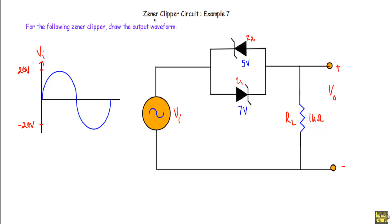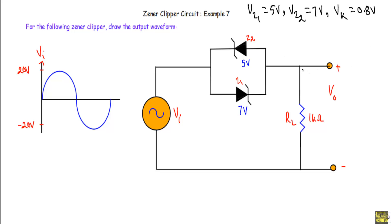In this video I will show you another example of a general clipper circuit. For the following general clipper, draw the output waveform. This is our given circuit — we have to draw the output waveform. In this circuit we have two Zener diodes Z1 and Z2. Z1 has Zener breakdown voltage Vz1 equal to 5 volt, Z2 has Zener voltage Vz2 equal to 7 volt. For the circuit analysis we will assume the built-in potential of the Zener diode is equal to 0.8 volt. We are applying a sinusoidal voltage with positive peak +20 and negative peak −20 volt.